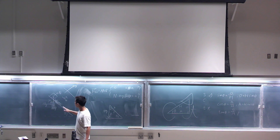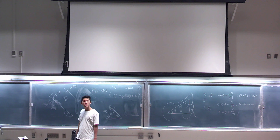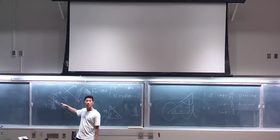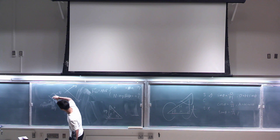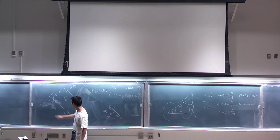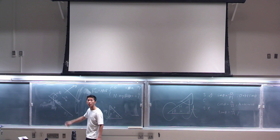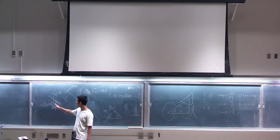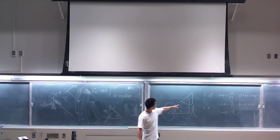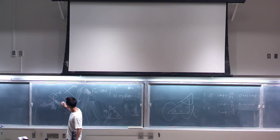What will be the x-component of gravity if this is theta? Let me move that vector down here. This vector and this vector are the same one. Now this is the opposite side, so if this is theta and this is mg, what is the x-component of gravity? The hypotenuse over opposite side — that's sine, right? Hypotenuse over adjacent side gives cosine, so one is sine and the other is cosine.